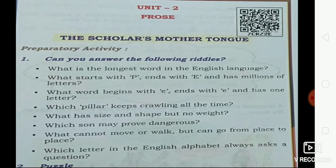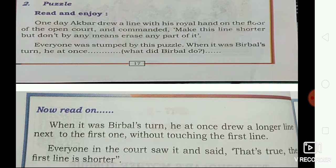Last one: which letter in the English alphabet always asks a question? Which letter from A to Z? The answer is 'Y' — the letter Y. I hope you are writing. Okay, let us move to the second activity, that is a puzzle.